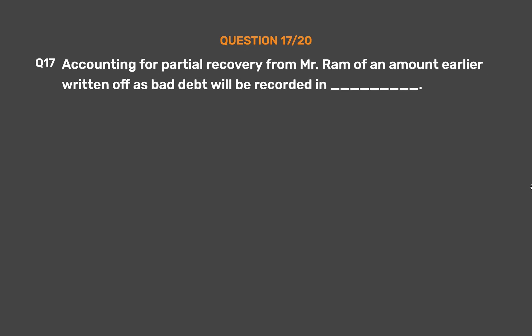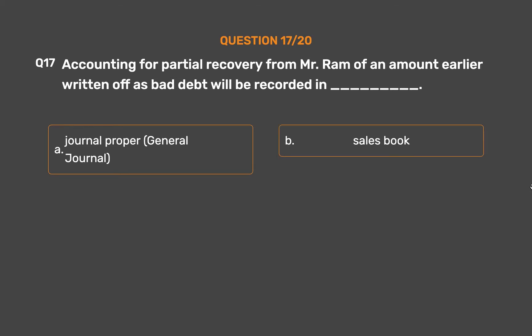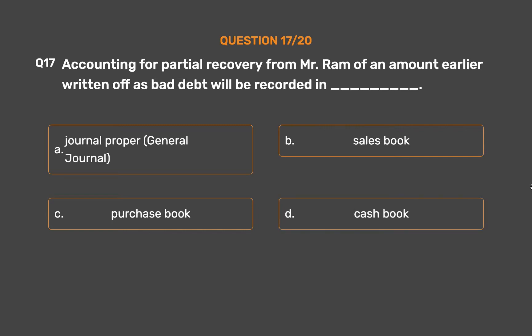Question number seventeen: accounting for partial recovery from Mr. Ram of an amount earlier written off as bad debt will be recorded in — Option A: journal proper / general journal. Option B: sales book. Option C: purchase book. Option D: cash book.